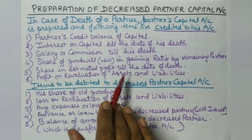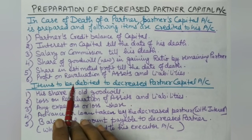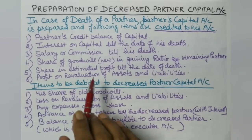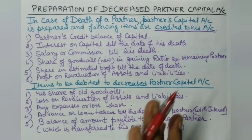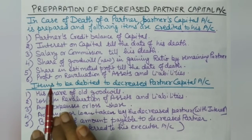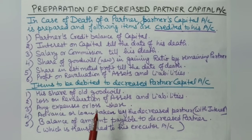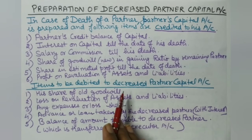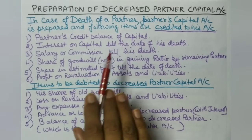Fifth credit item is the share in estimated profit till the date of death. Because the accounting is not yet closed and we cannot determine exact income and expenses, we calculate an estimated profit for the period up to the date of death and credit the deceased partner's share. Sixth credit item is profit on revaluation of assets and liabilities. If the revaluation account shows a profit, the deceased partner's share of that profit is credited to his capital account.